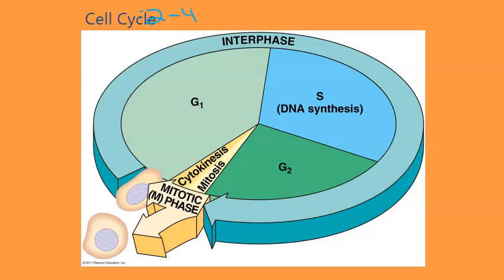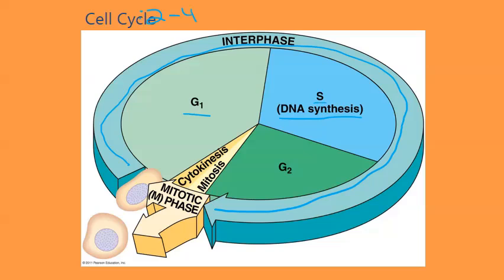The cell cycle consists of several phases. We have interphase — pretty much interphase is everything that's not mitosis or cytokinesis. We have G1, which is growth period number 1. The cell grows large enough to allow for DNA to replicate itself during the S phase. Then the cell grows again during the G2 phase. And finally the cell enters mitosis, which is the division of cells from one cell to two. Then the cell goes back into interphase and continues on in the circular pattern of the cell cycle for its entire life.